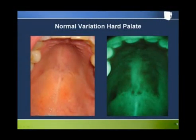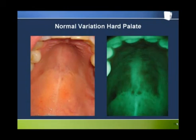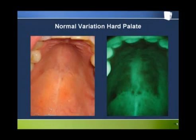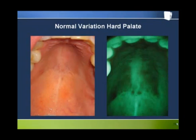This is another interesting presentation of a normal variation that can be seen in white light and fluorescence visualization of the hard palate. The bilateral presentation is a good sign that this is some sort of benign variation. The darker red appearance of the hard palate under white light and the pronounced darkness through the Velscope seem to suggest that the tissue has become hypervascularized, perhaps in response to oral habits or as a result of anatomical variation.